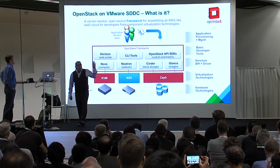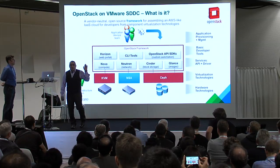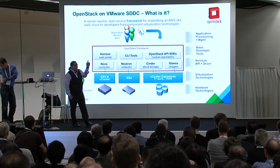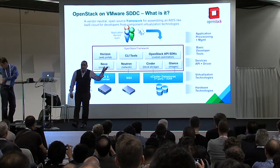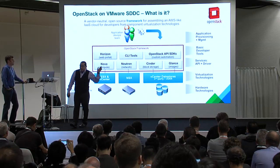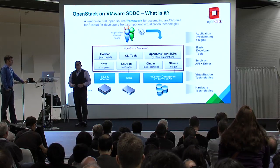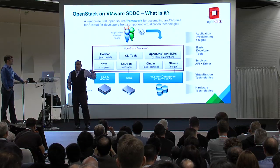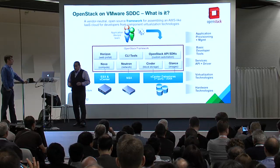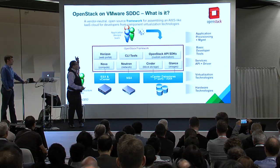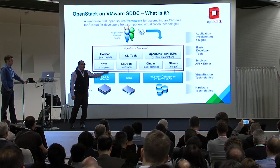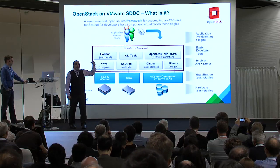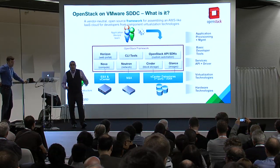With NSX, we actually take over the Linux Bridge and provide all the plumbing for the network environment. Using ESX as a hypervisor, we provide the ESX hypervisor as well as vCenter for scalability. You can use any type of vCenter storage — a third party that plugs into the data storage environment, or the vSAN product. Your application developers, DevOps teams have all the open APIs currently available.